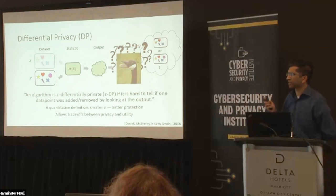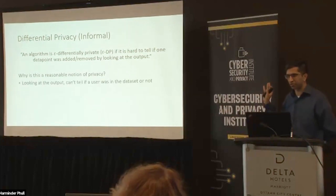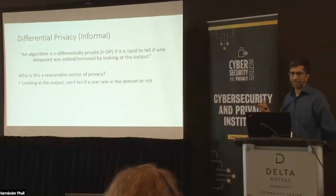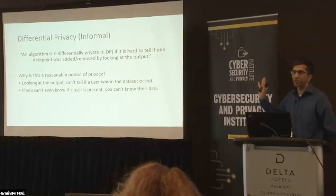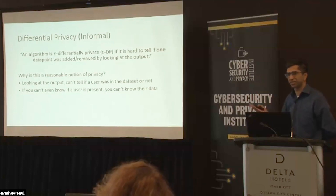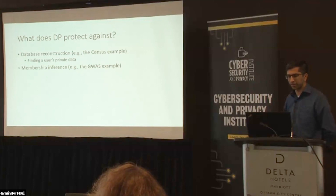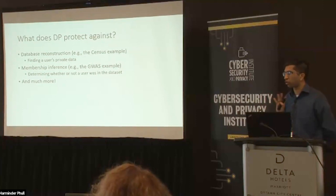Why is this a reasonable notion of privacy? The definition says that looking at the output, you can't tell if a user was in the dataset or not. Therefore, if you can't even tell if a user was present knowing everything about them, then you certainly can't know their data — for example, whether they're pregnant or not, amongst other things. This prevents a number of different attacks, including database reconstruction such as the census example, and membership inference such as the GWAS example. It's a very rigorous and strong notion of data privacy that prevents a whole swath of different privacy attacks.